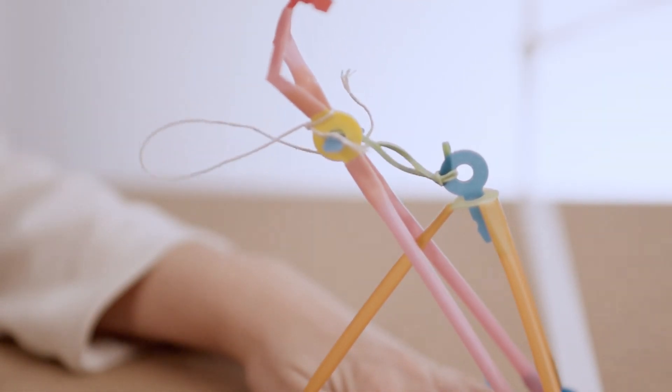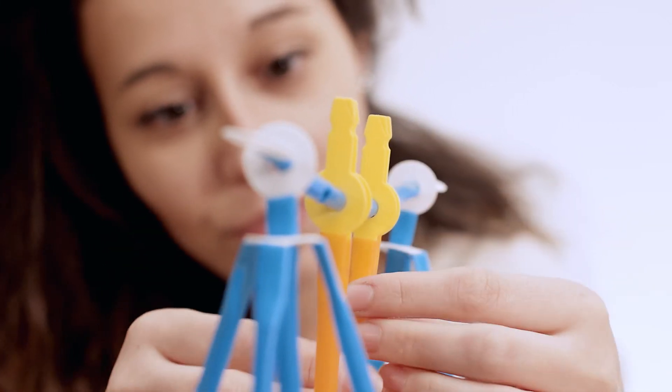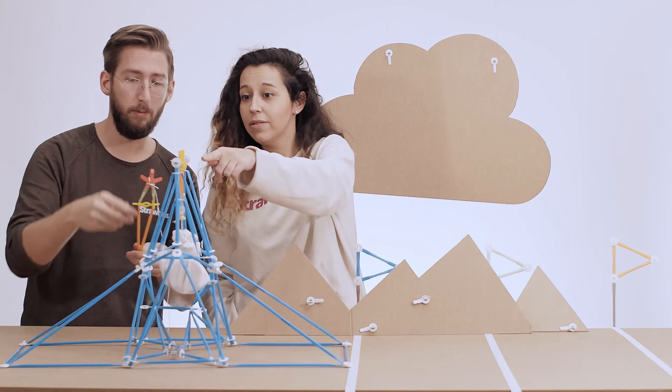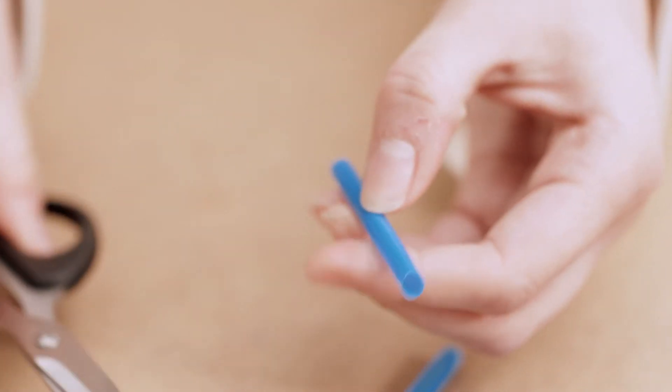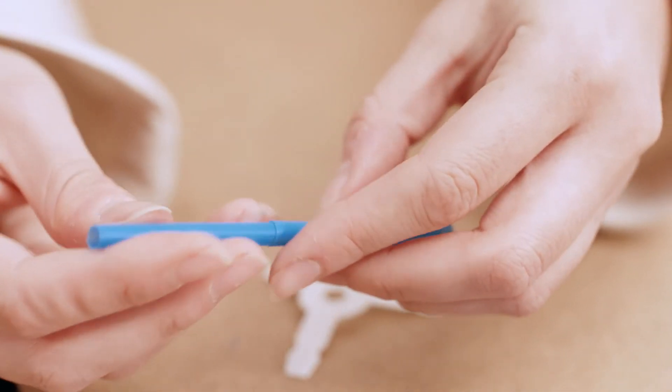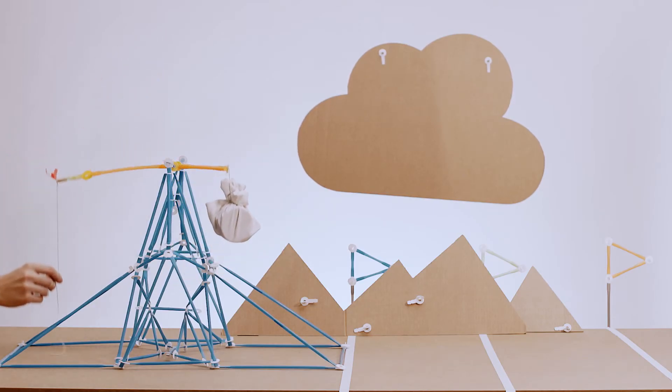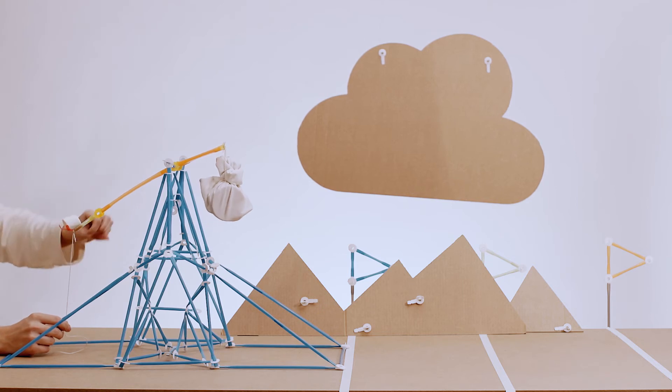secured to the arm and frame. Encourage teams to build big with trebuchets. For building the pivot to hold the counterweight and launching arm, you can slice open straws and layer them together for strengthening. Try different materials for projectiles and observe how they travel through the air.